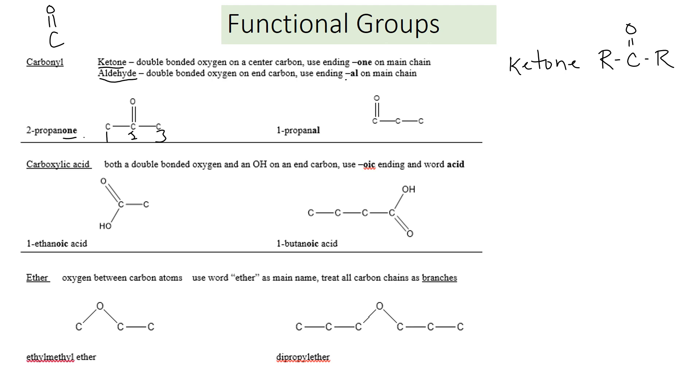Aldehyde is very similar. It ends in AL, but in this case the double bonded oxygen is on one of the end carbons. Here we have propanal: one, two, three. You have your three carbons for the prop, and the one indicating that the double bonded oxygen is on the first.